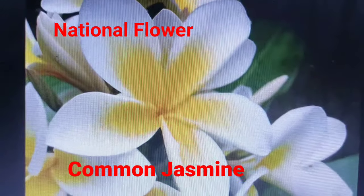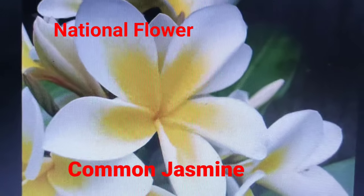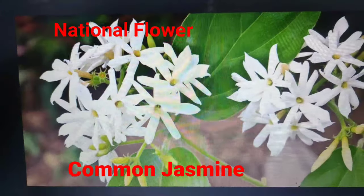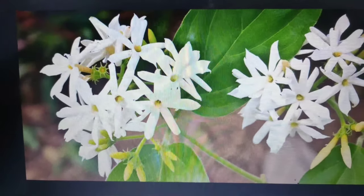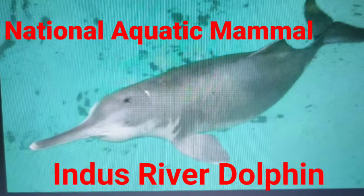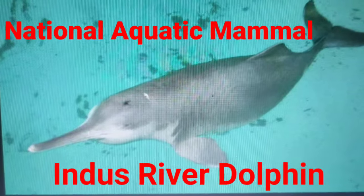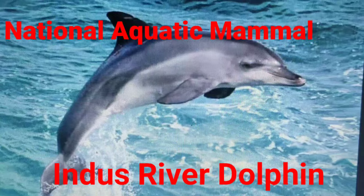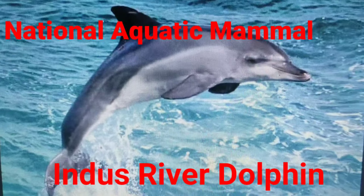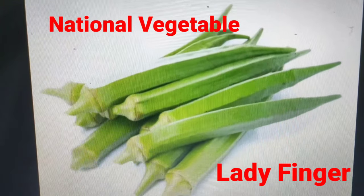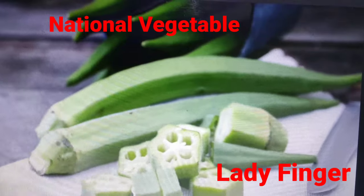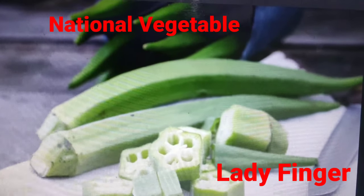The national flower is common jasmine. The national aquatic mammal is the Indus river dolphin, and the national vegetable is ladyfinger.